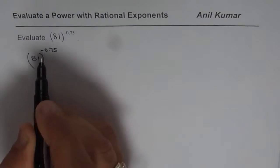Now minus means 1 over 81, that means reciprocal, to the power of 0.75. So first step is clear.